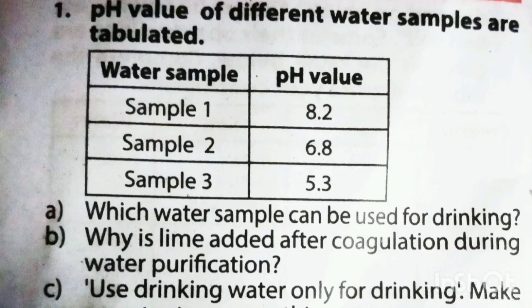The pH values of different water samples are tabulated. Sample 1 is 8.2, Sample 2 is 6.8, Sample 3 is 5.3. Which water sample can be used for drinking? Sample 2 is correct because its pH value of 6.8 falls within the acceptable range of 6.5 to 7.5.